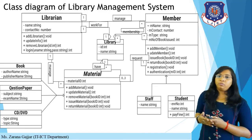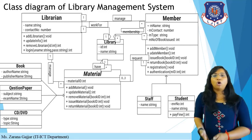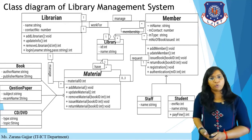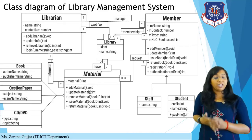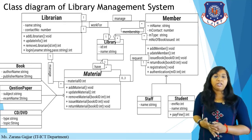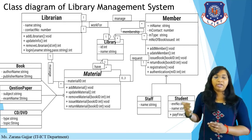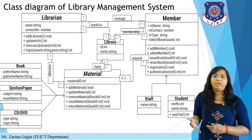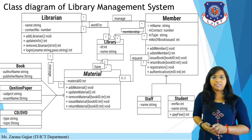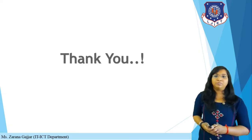That's all for today's lecture. We studied the class diagram relationships and examples of class diagrams including a food ordering system, bank management system, and library management system. Thank you.